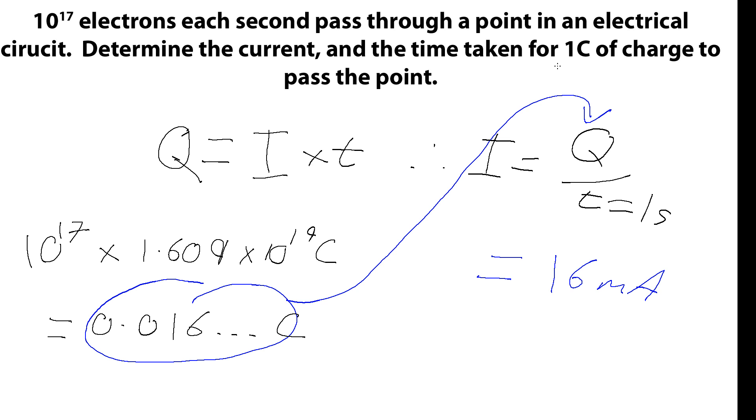The next part of the question asks us to work out the time taken for one Coulomb of charge. So we're just going to rearrange this equation again for time this time. So if we rearrange this, what we get is time is equal to charge divided by current. And so our charge is 1 Coulomb. We know our current from the previous part of the question is 16 milliamps. So as long as we're careful with these factors of 10, then once we punch that in, we get a value of 62 seconds. Just under 62 and a half seconds. So it will take, if we've got 10 to the power of 17 electrons flowing through some point each second, then it will take 62 seconds for one full Coulomb of charge to flow.